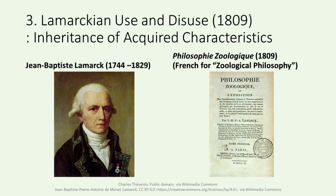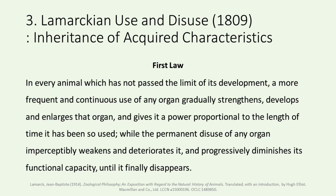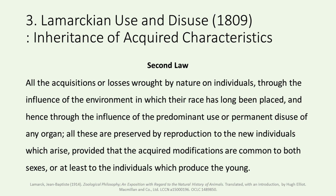Lamarck's ideas of use versus disuse and soft inheritance are well illustrated in this book. Here is an excerpt from the English translation by Hugh Elliott. First law: in every animal which has not passed the limit of its development, a more frequent and continuous use of any organ gradually strengthens, develops, and enlarges that organ, and gives it a power proportional to the length of time it has been so used, while the permanent disuse of any organ imperceptibly weakens and deteriorates it, and progressively diminishes its functional capacity until it finally disappears. Second law: all the acquisitions or losses wrought by nature on individuals, through the influence of the environment in which their race has long been placed, and hence through the influence of the predominant use or permanent disuse of any organ, all these are preserved by reproduction to the new individuals which arise, provided that the acquired modifications are common to both sexes, or at least to the individuals which produce the young.